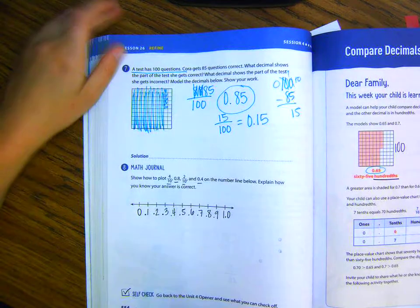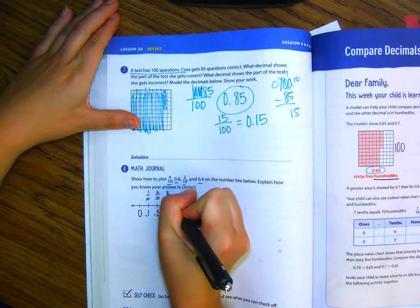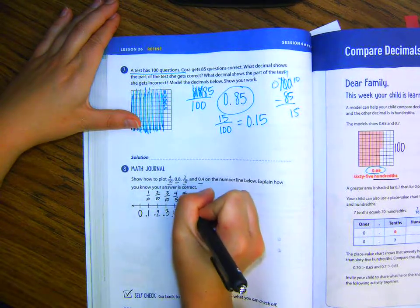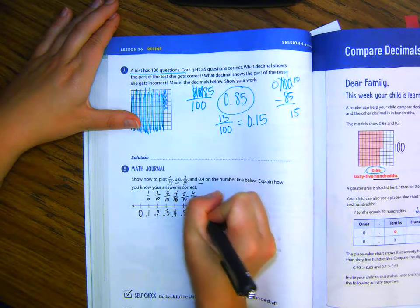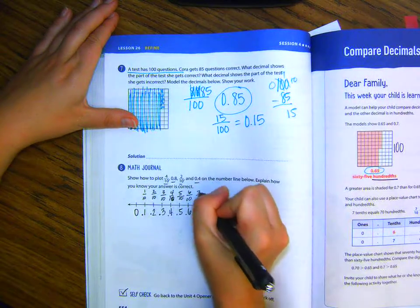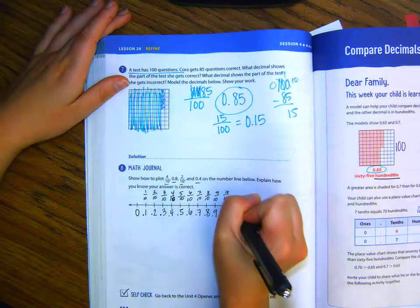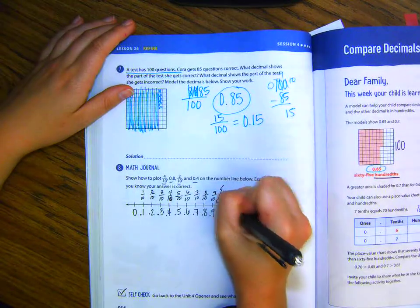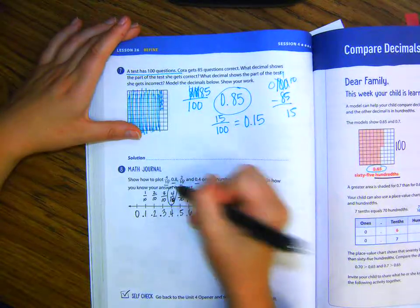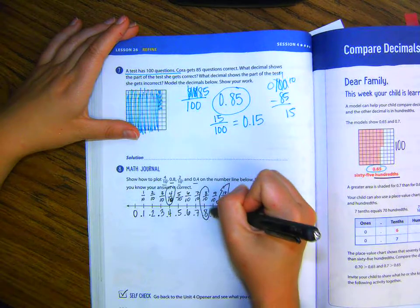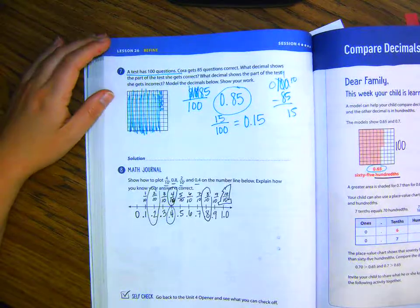If I'm going to write them as fractions, I could just write it on top. So, this is one-tenth, two-tenths, three-tenths, four-tenths, five-tenths, six-tenths, eight-tenths, nine-tenths, and then we could say ten-tenths, or that's the same as saying one. So, four-tenths is right here, eight-tenths, two-tenths, and then .4. So, I hope this helps.